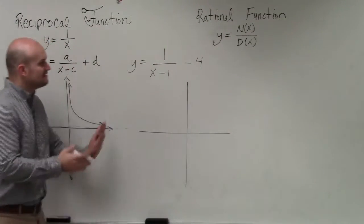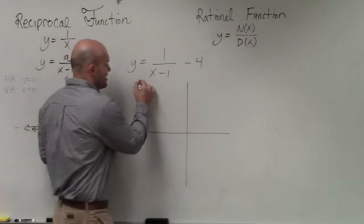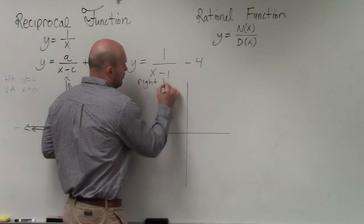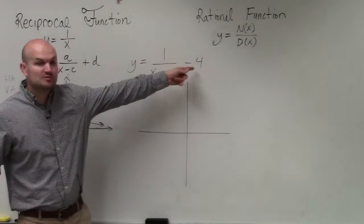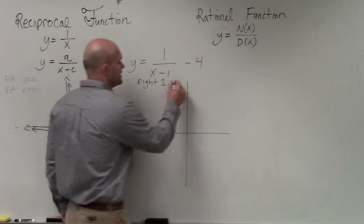So what I'd recommend doing is if I'm shifting this graph, we know the graph is going to go right 1, because I'm subtracting 1 inside of the function, and I'm subtracting 4 outside of the function, so I'm going to go down 4.